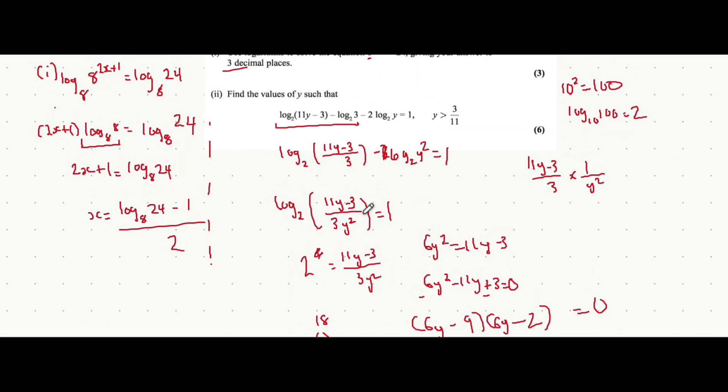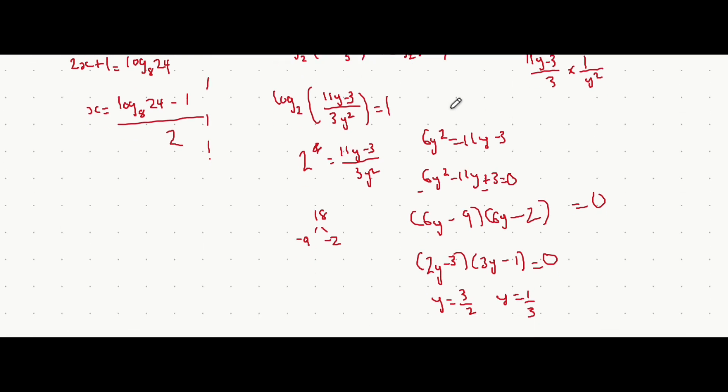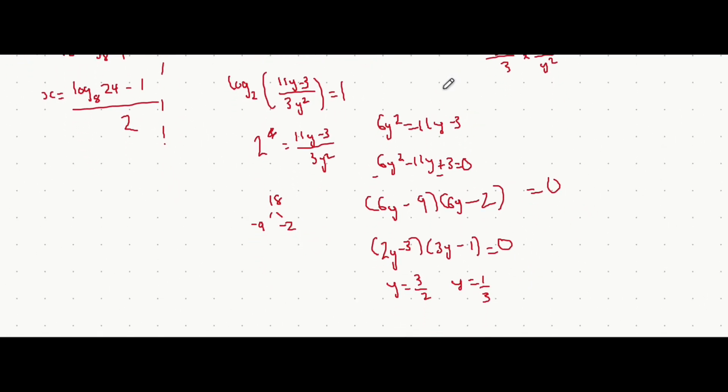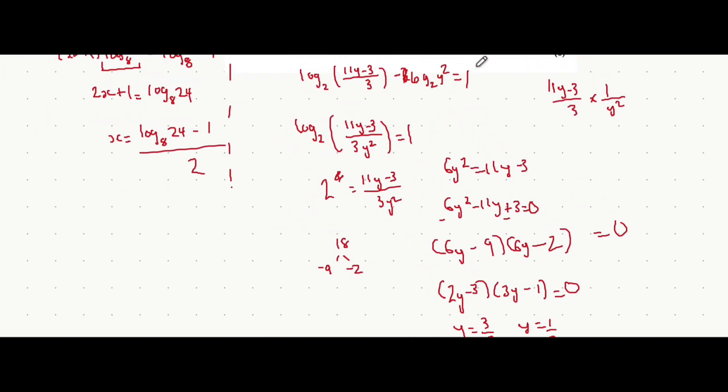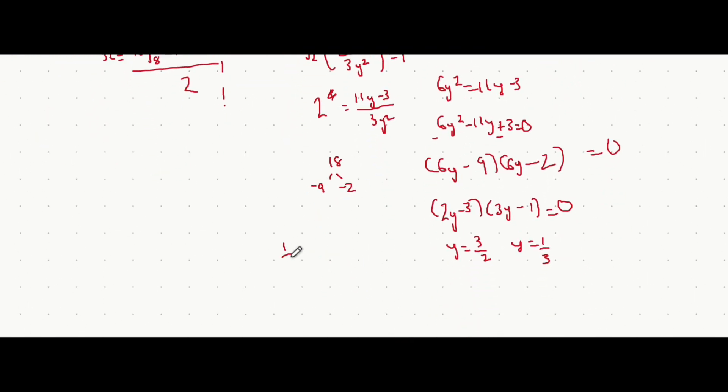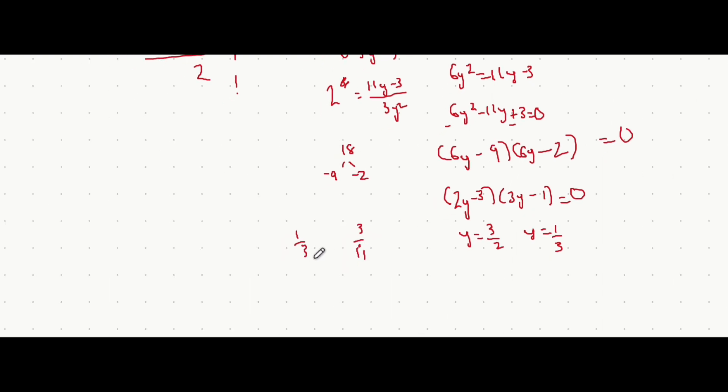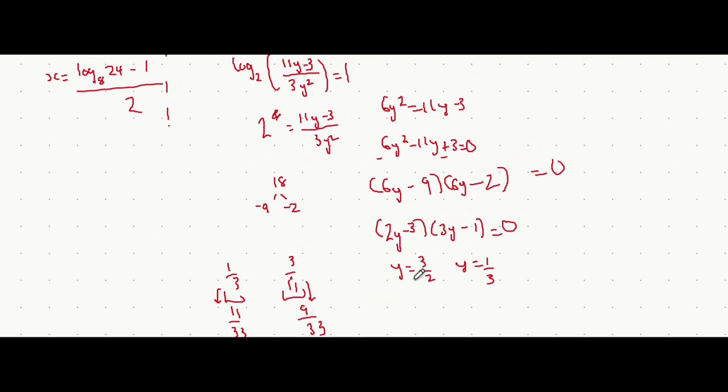And just double checking the question, it wants y to be bigger than 3 over 11. And you might have to double check, but 1 third, I'm just going to double check if 1 third is bigger than 3 over 11. So the easiest way is to make it so that the denominators are the same, so they can easily be compared. Let's multiply top and bottom of this fraction by 11 to get 11 over 33. Multiply top and bottom of this fraction by 3 to get 9 over 33. And a third is therefore bigger than 3 elevenths, because 11 over 33 is bigger than 9 over 33. So both of these are valid solutions for your final answer of y.